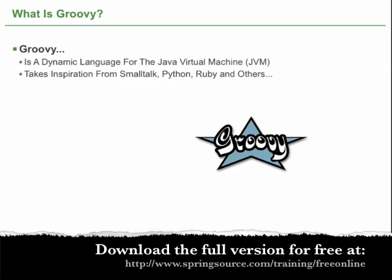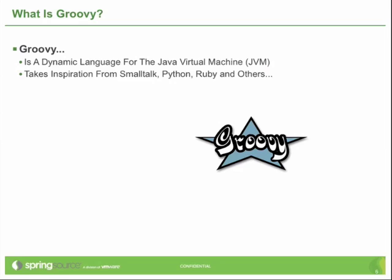The benefits of that manifest in really a lot of ways. For example, in the beginning as Groovy was emerging, developers did not have to wait for libraries to be developed for Groovy. Groovy developers didn't have to wait for a version of Log4j that supported Groovy, didn't have to wait for a version of Spring that supported Groovy, and did not have to wait for containers like Tomcat to have support for Groovy.